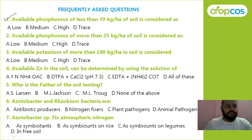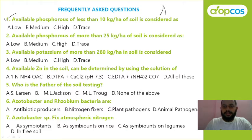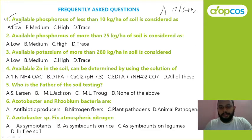First question: available phosphorus of less than 10 kg per hectare is considered as high, medium, or low? This is in the case of acidic soil, tested by the Olsen method. In such a case, the answer is low. Second: available phosphorus of more than 25 kg per hectare — the range is 10 to 25 — if it is more than 25, then your answer is high.